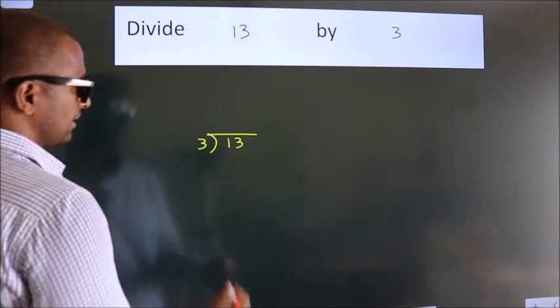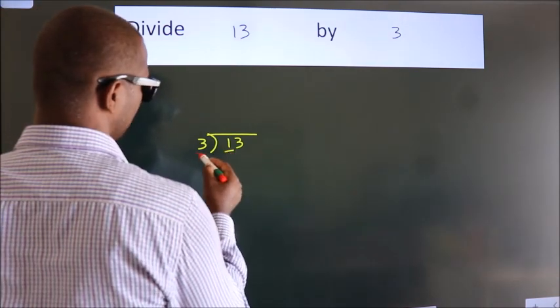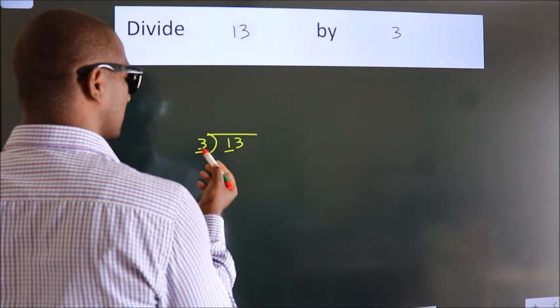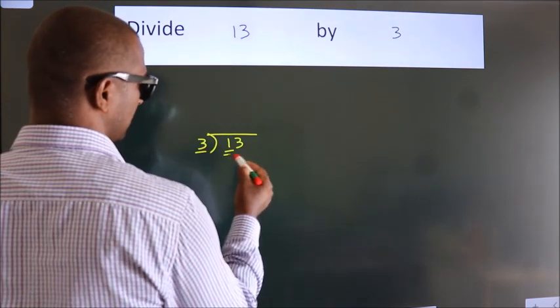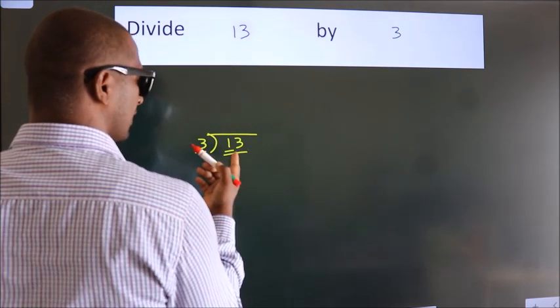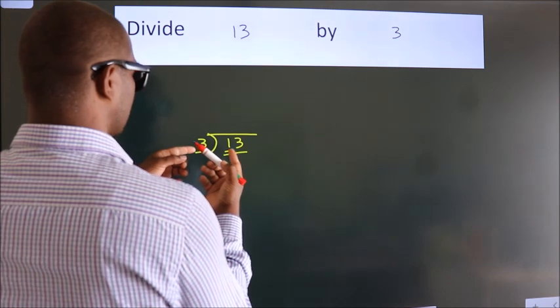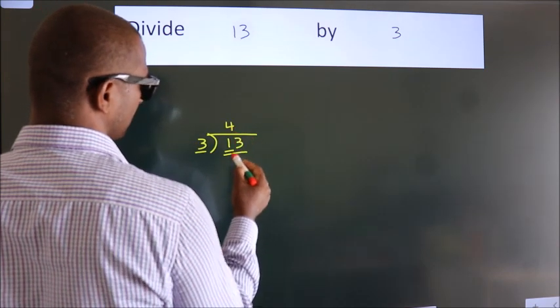Next, here we have 1, here 3. 1 is smaller than 3, so we should take two numbers, 13. A number close to 13 in the 3 table is 3 fours, 12.